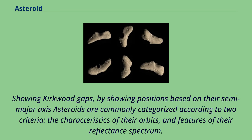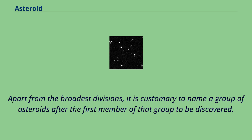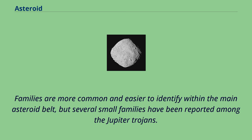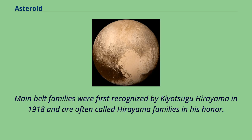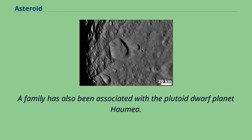Asteroids are commonly categorized according to two criteria: the characteristics of their orbits and features of their reflectance spectrum. Many asteroids have been placed in groups and families based on their orbital characteristics. Groups are relatively loose dynamical associations, whereas families are tighter and result from the catastrophic breakup of a large parent asteroid sometime in the past. Main belt families were first recognized by Kiyotsugu Hirayama in 1918 and are often called Hirayama families in his honor. About 30–35% of the bodies in the asteroid belt belong to dynamical families, each thought to have a common origin in a past collision between asteroids. A family has also been associated with the plutoid dwarf planet Haumea.